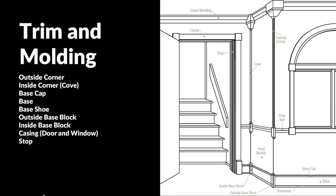We also have the baseboard that's on the floor going up the wall, also referred to as base. The baseboard or base is the largest part attached to the wall. We can also have a cap on the top that finishes off the base, and then what's referred to as a shoe at the bottom where the floor and the baseboard meet — often a piece of quarter round or something like that. We have outside and inside blocks in many situations so that you don't have to miter the corner of the wood.